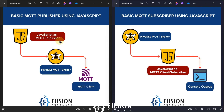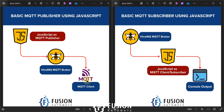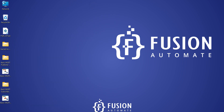In the previous code, JavaScript was publishing data to the HiveMQ MQTT broker and we were reading the data in MQTT Explorer. Now instead of MQTT Explorer, we will use JavaScript as the MQTT client — the MQTT subscriber — which will subscribe to the topic inside HiveMQ and print the topic result in the console.